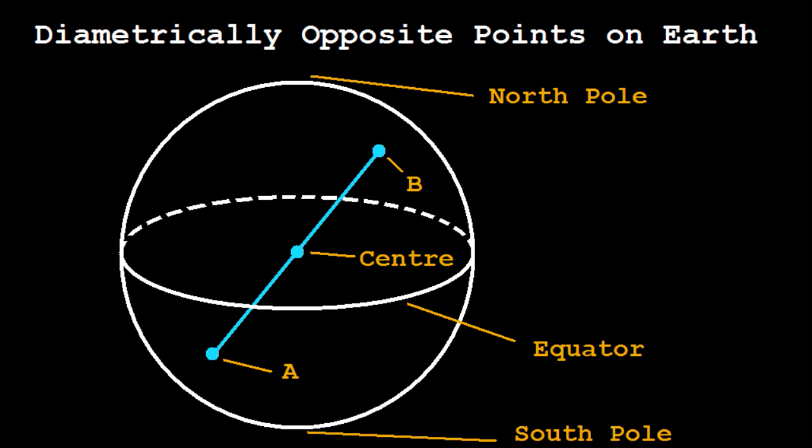So firstly, what you're going to need to understand is what I mean by a pair of diametrically opposite points on a sphere. In general, if you have a point A on a sphere, its diametrically opposite point B is found by drawing a line through A and the center to where it intersects on the other side of the sphere.